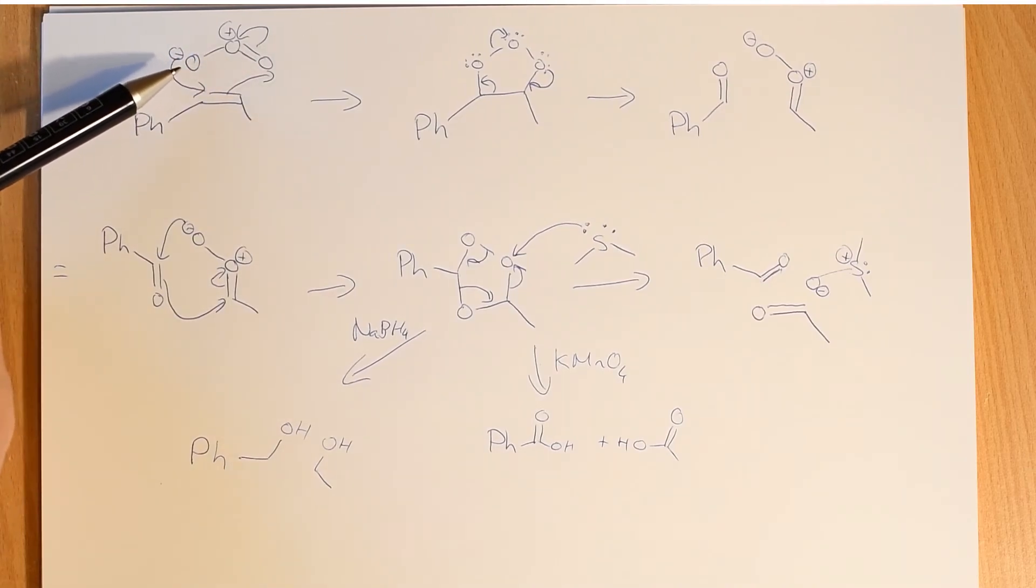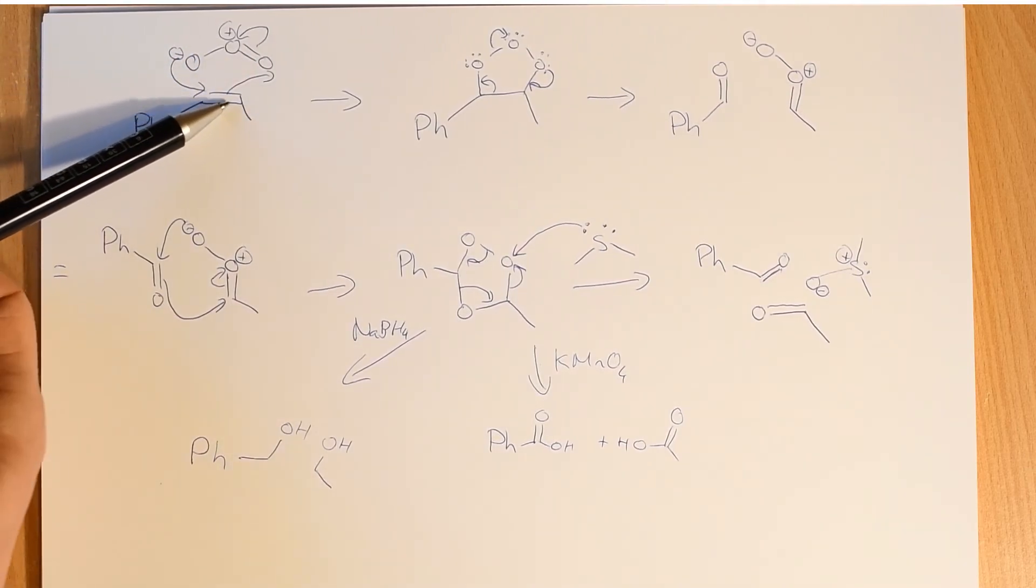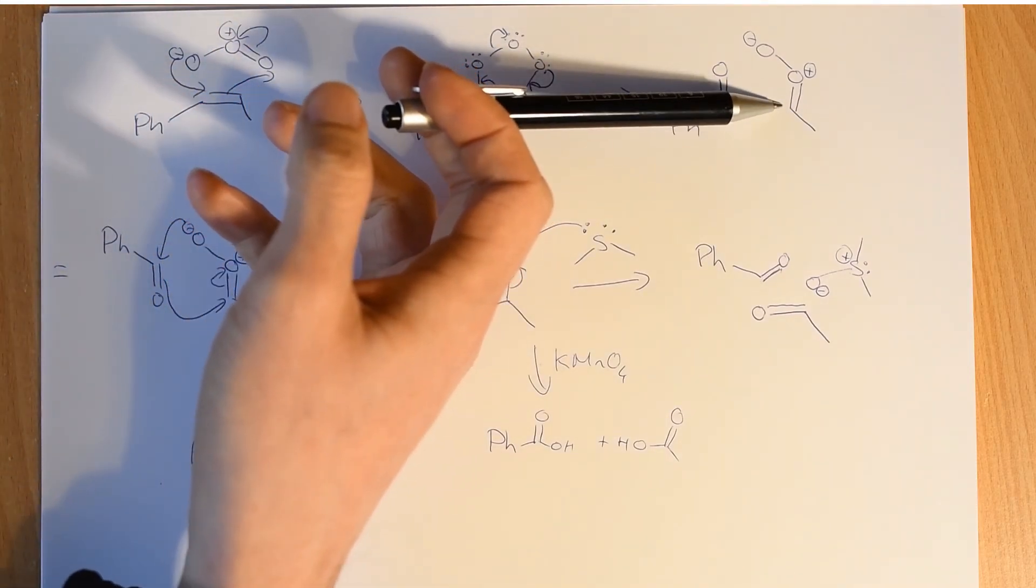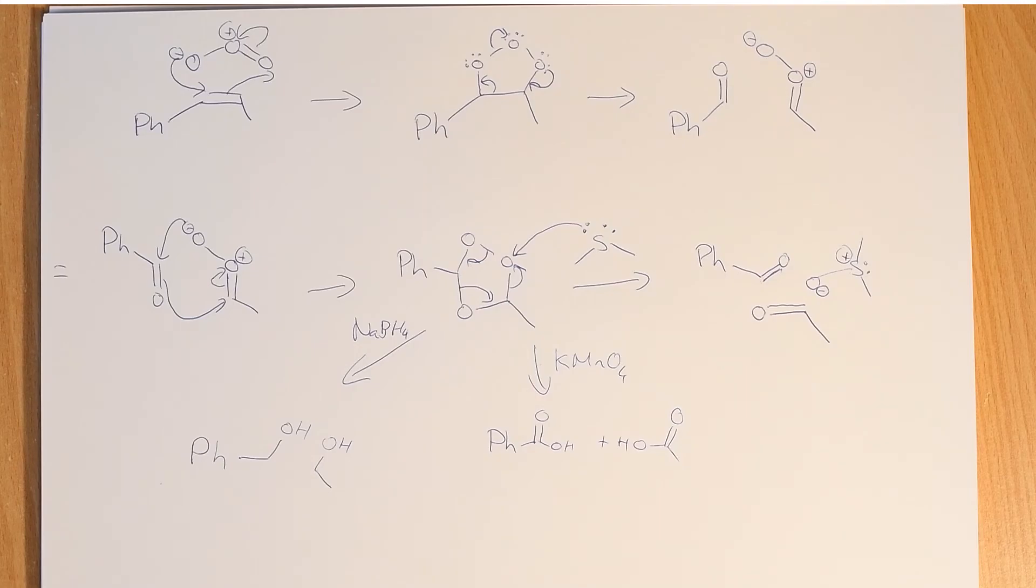And then ozone reacts pretty indiscriminately with alkenes or carbon-carbon double bonds that it finds around the place. And there are then produced aldehydes and reactive aldehyde-like species, or aldehyde oxides.